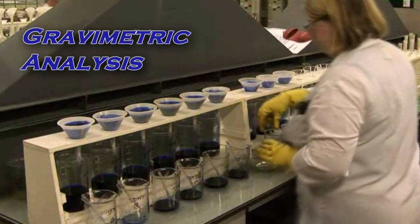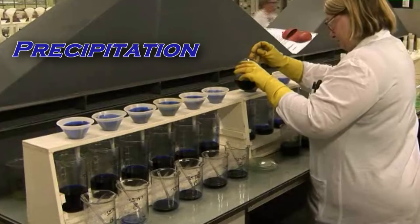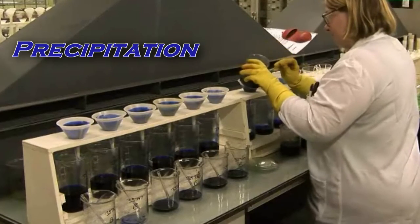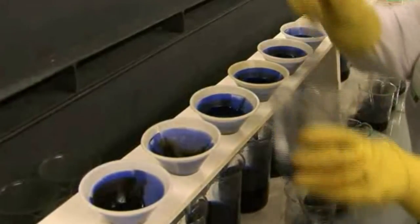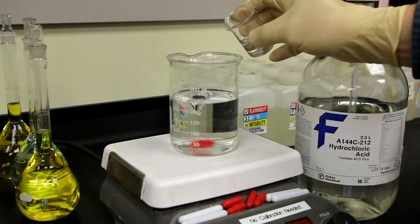Gravimetric analysis with precipitation is the most widely used wet chemistry method for precious metals. As with refining, precipitation is a key step to selectively separate elements using various chemicals.